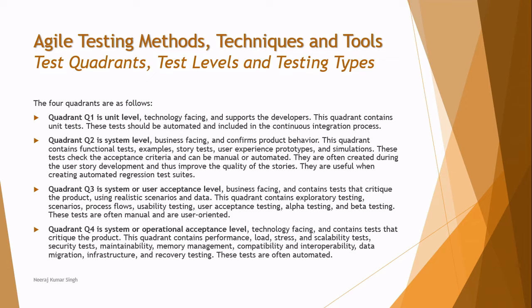Quadrant three is the system or user acceptance level, which is a continuation of quadrant two — covering system level as well as acceptance level testing such as alpha testing, beta testing, and so on. This is again business facing, specific to the product criteria, and ensures the product meets user expectations.